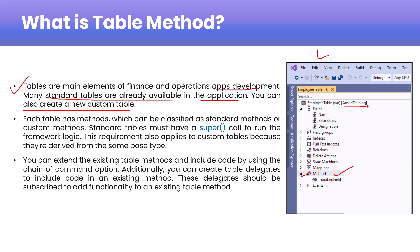In this example you can see a custom table present in the ANS IS training model, which I created for training purposes, and it is present in the USR layer. Each table has methods — for example, the employee table has a method called modifiedField. This particular modifiedField method is a standard method which is overridden.